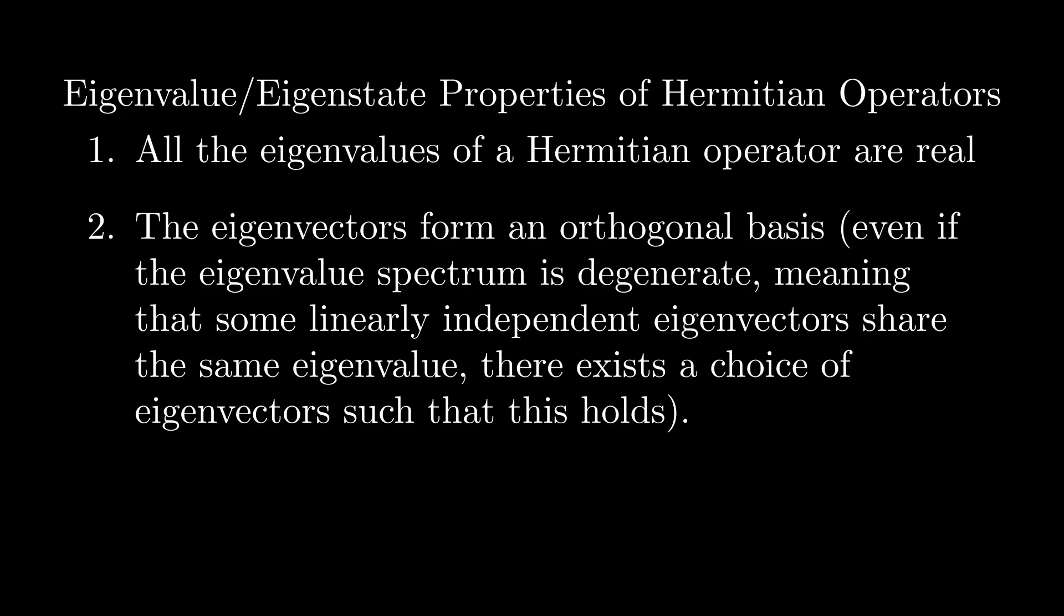Note that if the spectrum is degenerate, we can always choose an orthogonal eigenbasis. Since these states are orthogonal, this effectively means that all the eigenstates have no overlap in their projections, meaning that they can always be perfectly distinguished from each other. If we scale each eigenstate accordingly, we can get an orthonormal eigenbasis.